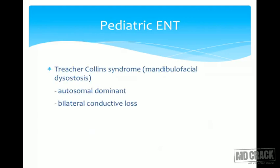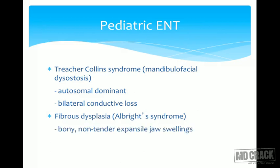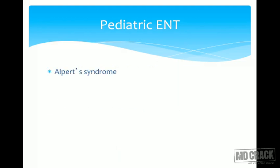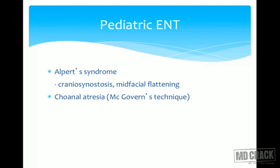Some syndromes commonly seen in pediatric patients: Treacher Collins syndrome (mandibulofacial dysostosis) is an autosomal dominant condition with bilateral conductive hearing loss. Albright's syndrome involves fibrous dysplasia with bony, non-tender expansile jaw swellings. Sturge-Weber syndrome features unilateral facial angiomatosis. Apert's syndrome involves craniosynostosis with mid-facial flattening.